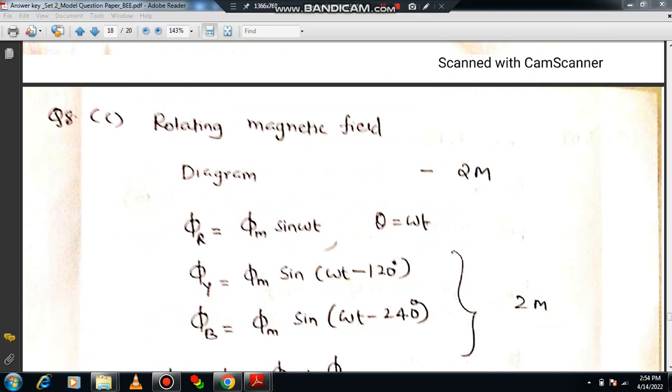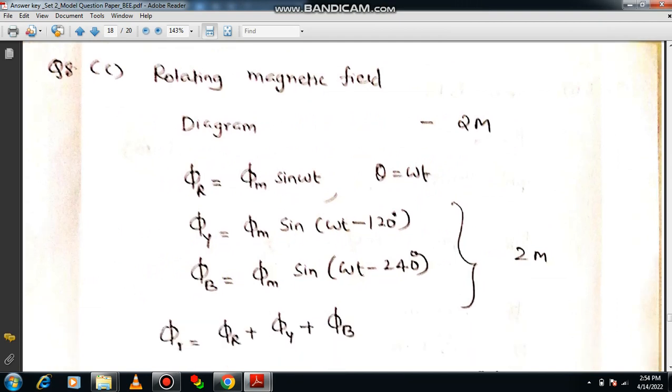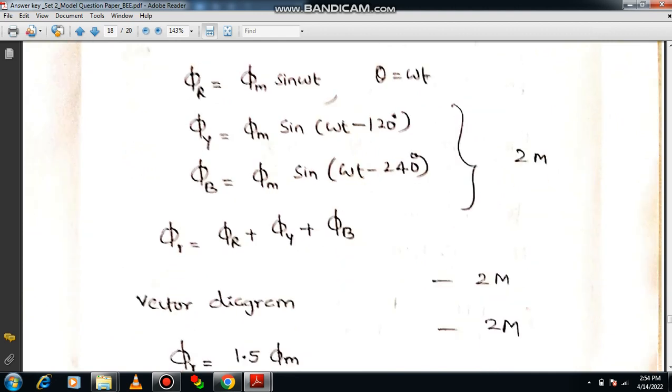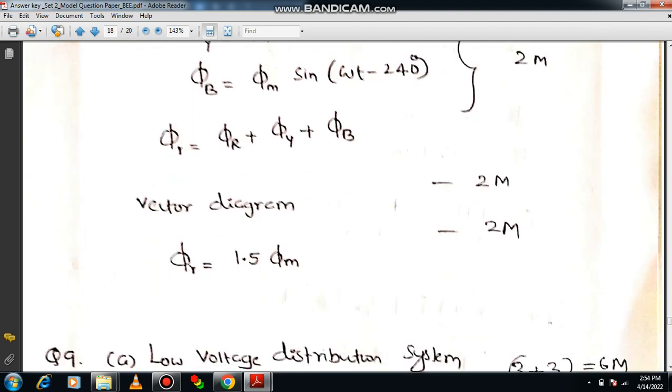First of all it is better to draw the relevant diagram related to star connection or delta. You can mention the stator winding. What about the displacement between each and every winding? 120 degree you can mention directly. Then you can mention the sinusoidal flux: Phi r equal to phi m sine omega t, Phi y is equal to phi m sine omega t minus 120, Phi b is equal to phi m sine omega t minus 240 or plus 120. Resultant flux is the sum of individual flux corresponding to the phases: Phi r plus phi y plus phi b. Vector diagram has to be drawn. You will be getting two marks. From that vector diagram apply the parallelogram law of vector addition. Then you will be getting resultant flux is equal to 1.5 times of the maximum flux. This equation you have to derive. Then your job will be completed.